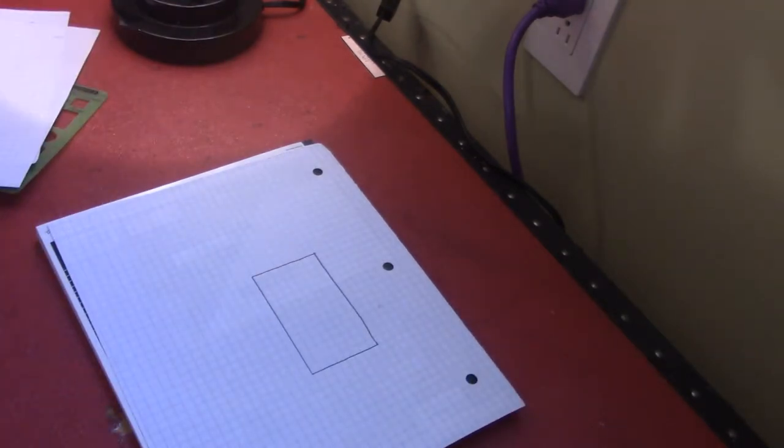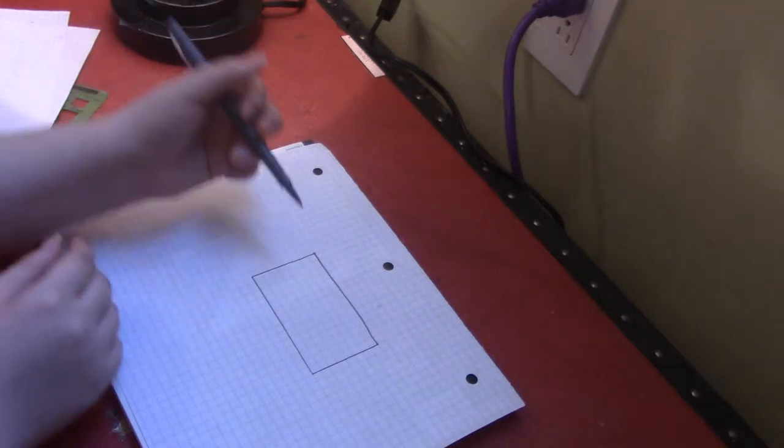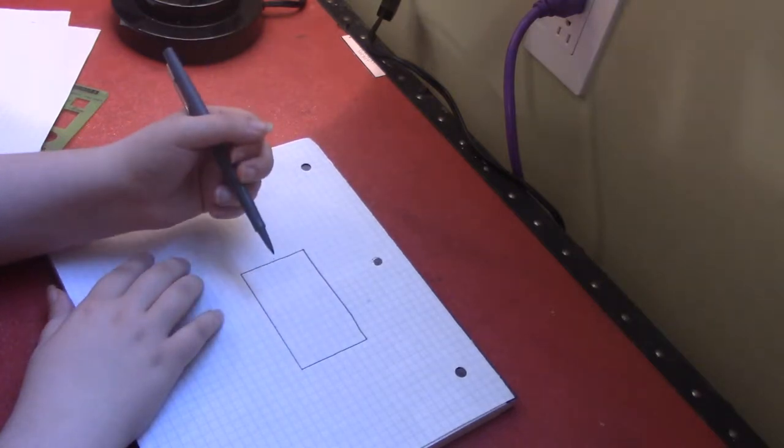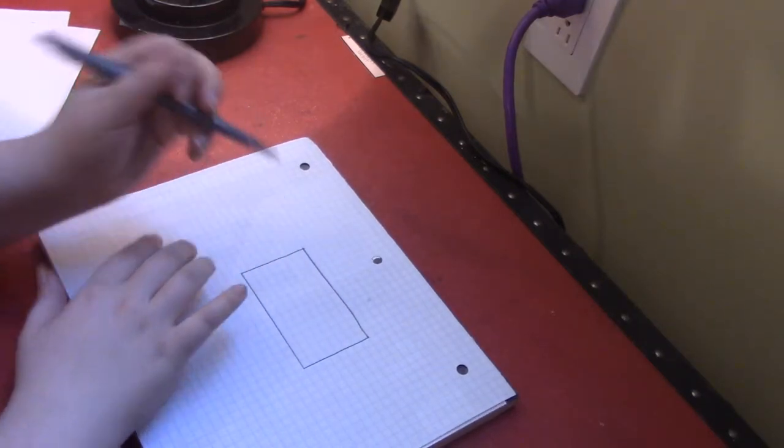And now we're going to be drawing out that wall there. I've already gotten the outline of it done, which is 8 by 14 feet, because that's how long the wall is and that's how long the storage is.